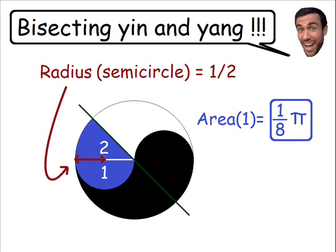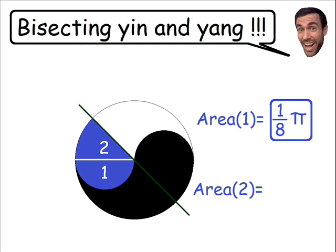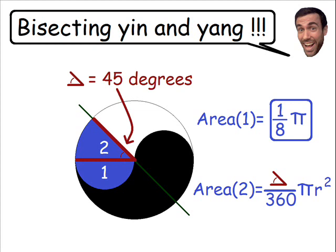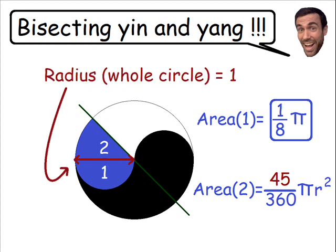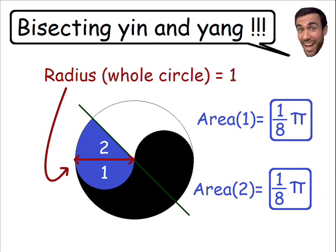Now let's find the area of section two. To find the area of this sector of a circle, we use the formula: central angle divided by 360, all times pi r squared. The central angle of this slice is 45 degrees, since the green line forms a 45-degree angle with the horizontal. The radius for this sector equals the radius of the whole circle, which is one. So 45 over 360 times pi times one squared also equals one eighth times pi.